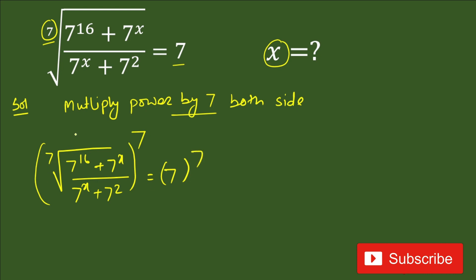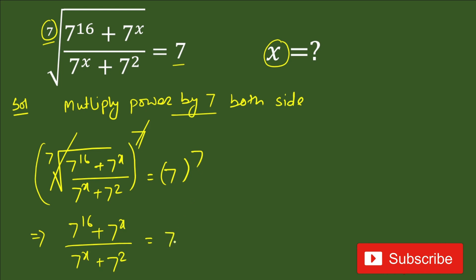On the left hand side, the square root of 7 power cancels with the power 7. On the right hand side we have 7 power 7. So we can write the equation as: (7 power 16 plus 7 power x) divided by (7 power x plus 7 squared) equals 7 power 7.